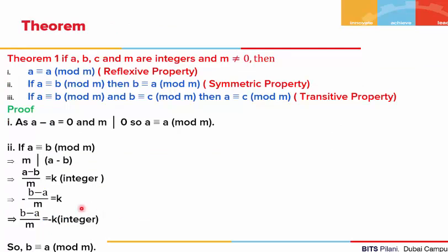Let us look at the first theorem. The theorem states: if a, b, c and m are integers, given that m is non-zero, then a is congruent to a modulus of m, which means that a is congruent to itself. This property is known as the reflexive property.